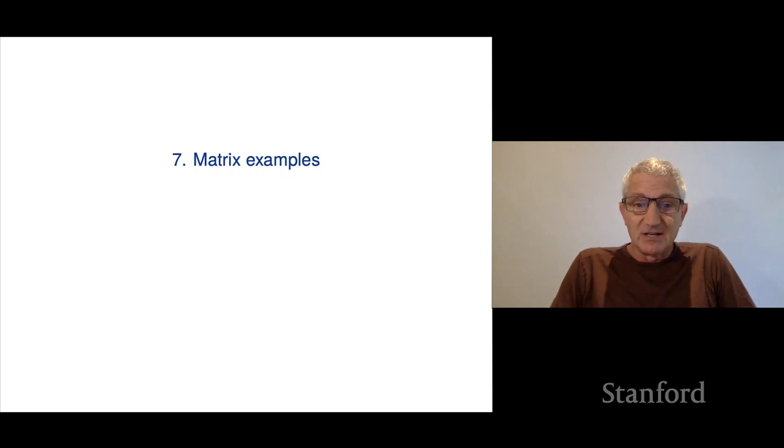We now turn to Chapter 7, which is matrix examples. And we'll look at a bunch of matrices that come up in applications. It's just to give you an idea of what matrices arise in practice, what they look like. And also in many cases, we'll look at things like what does a row mean or a column, or what does matrix vector multiplication mean, because that'll always be interesting depending on the application.